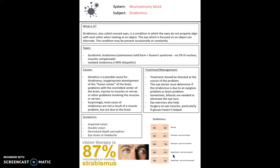Genetics is a possible cause for strabismus, involving inappropriate development of the fusion center of the brain. However, most cases are not the result of muscle problems but due to a brain injury. Treatment should be directed at the source of the problem. The eye doctor must determine if the strabismus is due to a seeing problem or a brain problem. Patients may need glasses, eye exercises, or surgery.